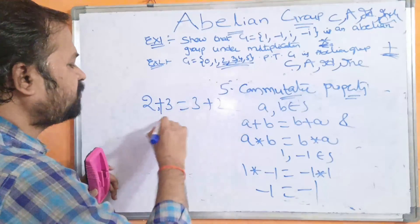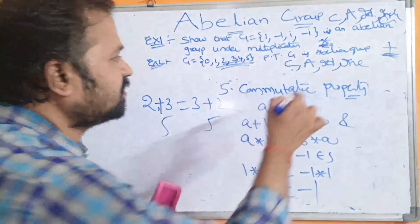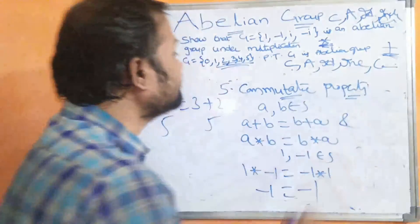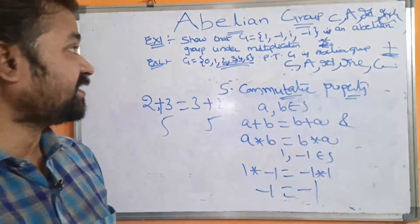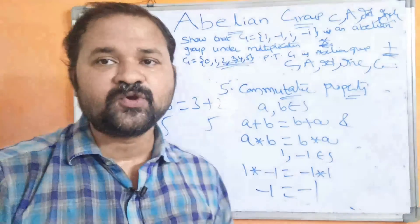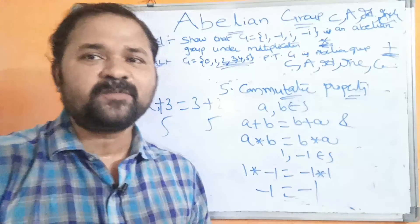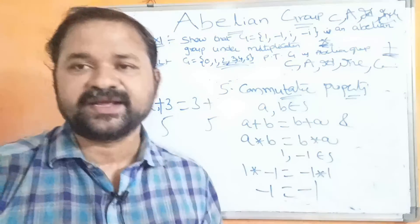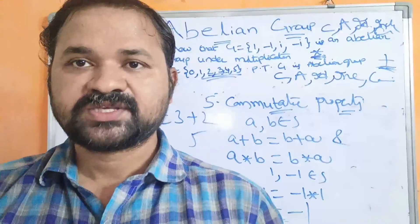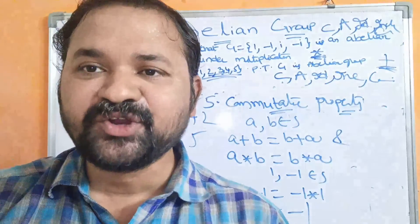For Example 1, take A = 1, B = -1: 1 ★ (-1) = -1 and (-1) ★ 1 = -1, so LHS = RHS. For Example 2, take A = 2, B = 3: 2 + 3 = 5 and 3 + 2 = 5. So commutative property is satisfied for both examples, and both are abelian groups.